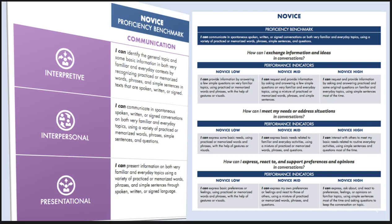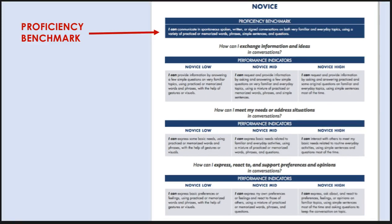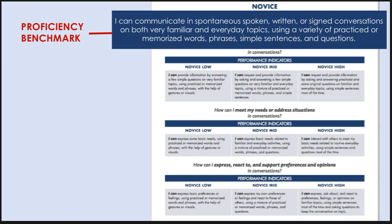The Can-Do Statements address both proficiency and performance. The proficiency benchmark describes what language speakers can do in real-world situations independent of classroom instruction. For example: I can communicate in spontaneous spoken, written, or signed conversations on both very familiar and everyday topics using a variety of practiced or memorized words, phrases, simple sentences, and questions. This benchmark covers the entire novice range, and proficiency in this document is not broken into sub-levels.